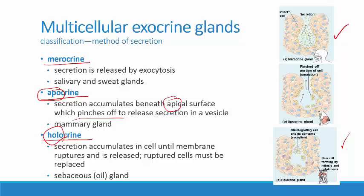So to recap: with merocrine secretion we see exocytosis releasing the secretion; with apocrine secretion, the top part of the cell pinches off carrying away the secretions, then the cell regrows and later that top part pinches off again; and with holocrine secretion, the entire cell bursts open releasing the secretion plus all the cell contents.